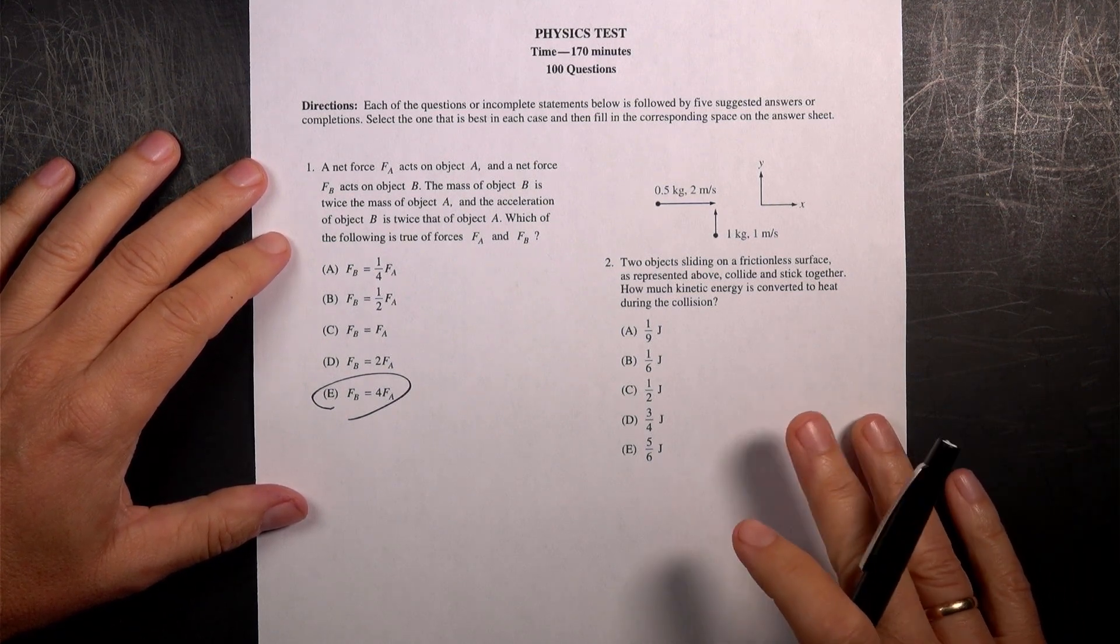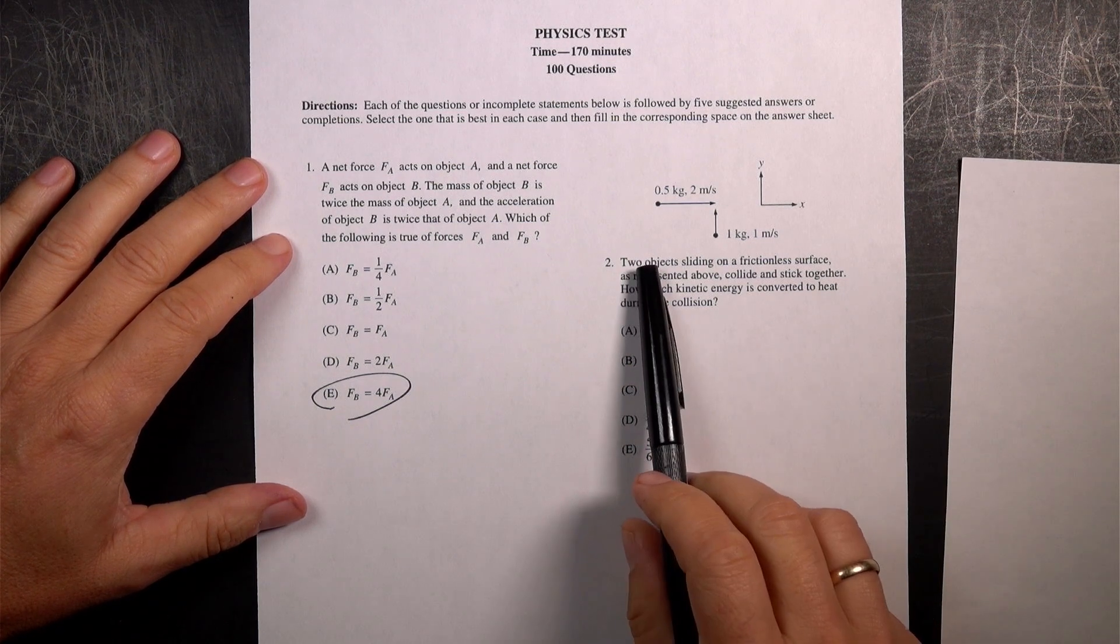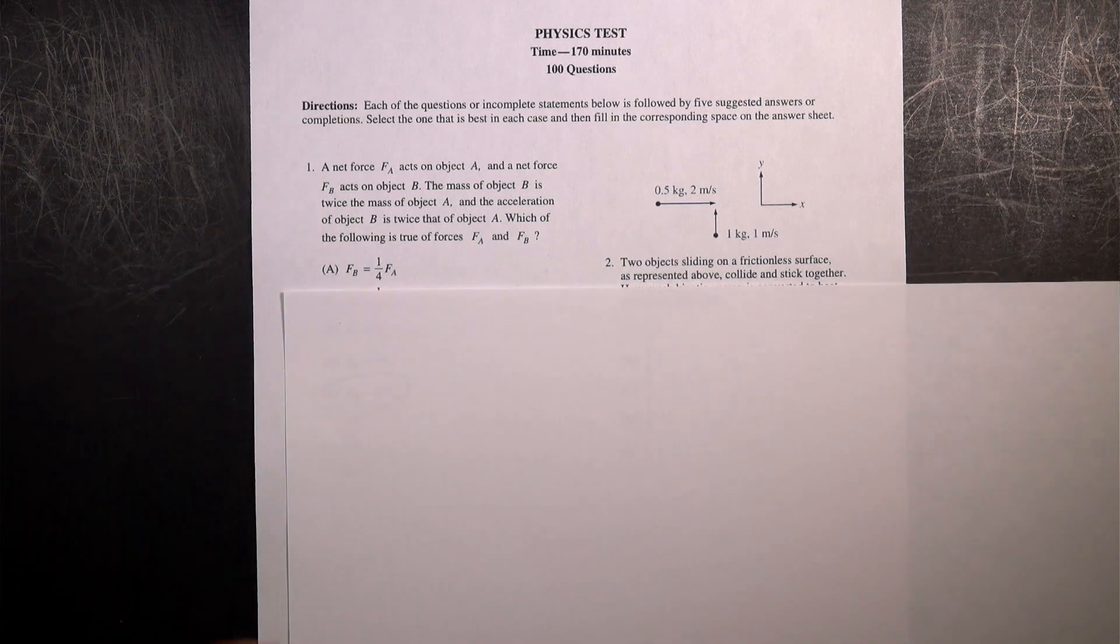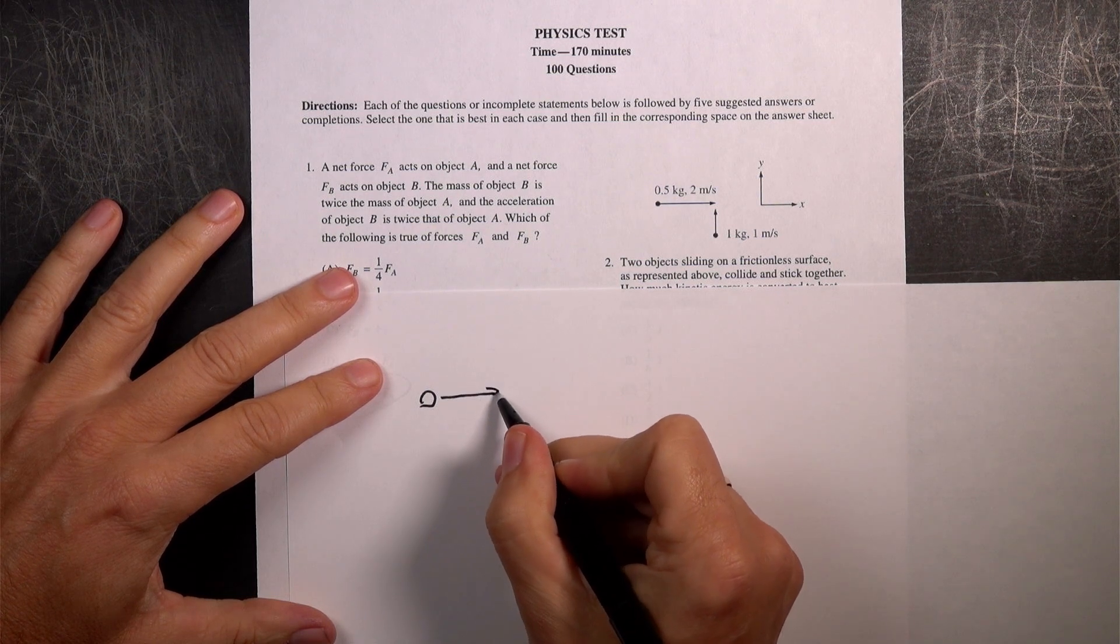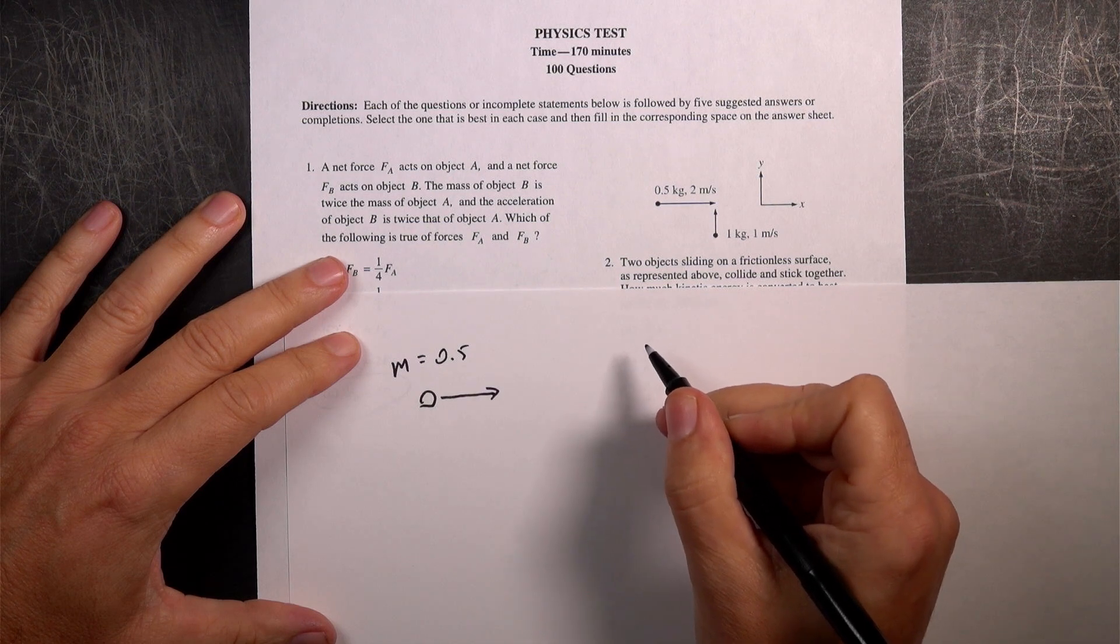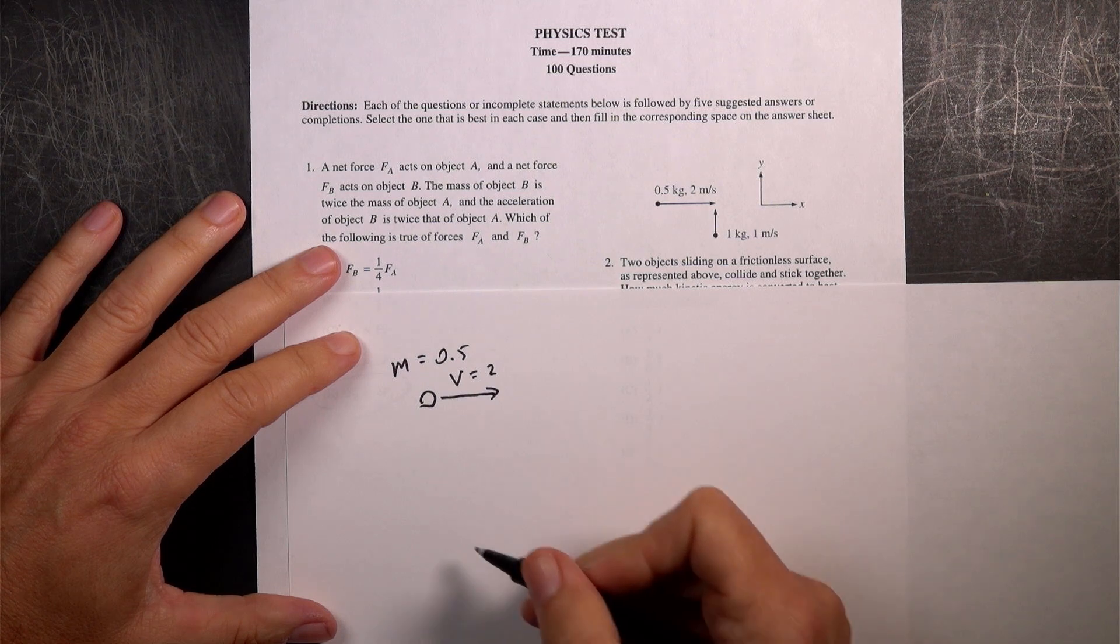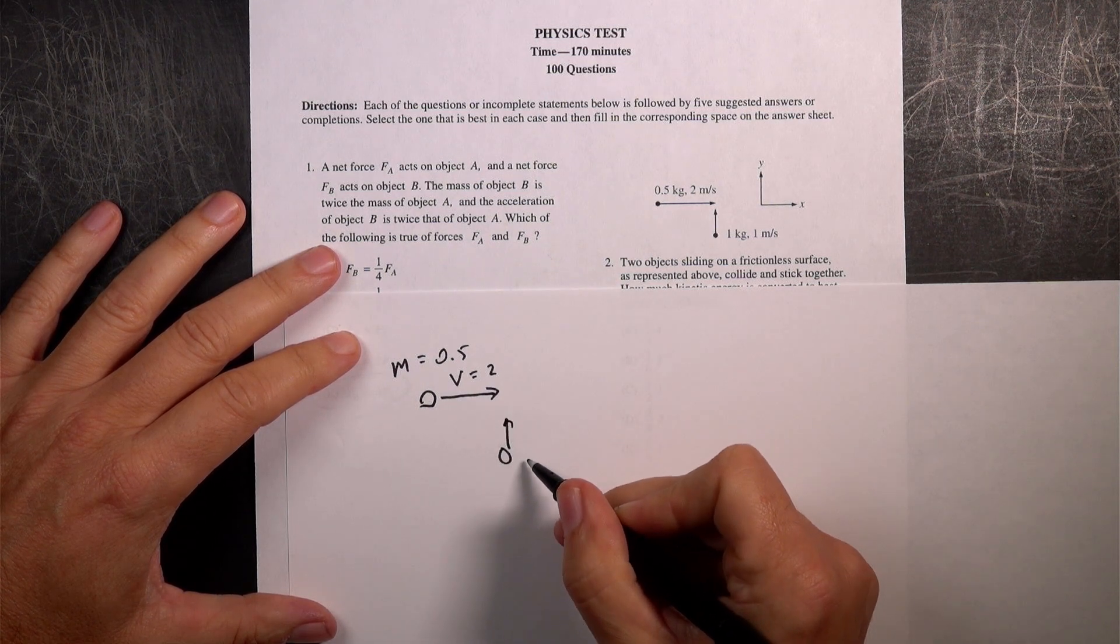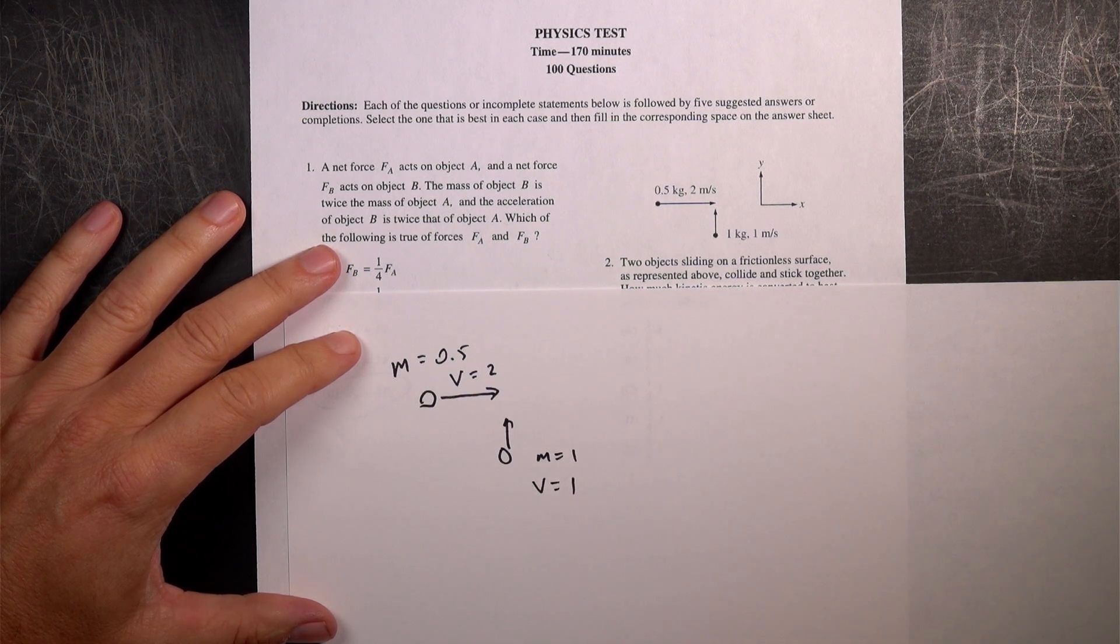And this one seems already more complicated, but let's just jump right into it. So it has a picture up here. I'm going to redraw that picture so it looks a bit better. I think it helps me consider what's happening. So I have this, M equals 0.5, V equals 2 meters per second in the X direction. And then this is M equals 1, V equals 1 in the Y direction. And then they don't have anything.